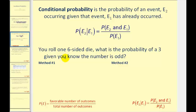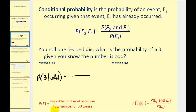Here's the problem. If you roll one six-sided die, what is the probability of a three given you know the number is odd? If we know that the number is already odd, that reduces the total number of outcomes. There are three numbers from one to six that are odd: one, three, and five. So there are three possible outcomes, and there's only one odd number that is three, so the probability would be one third.